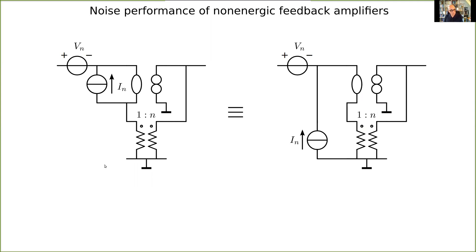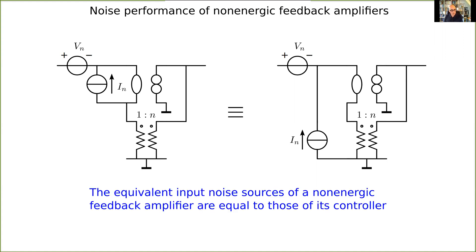Now we see that the equivalent input noise sources of the amplifier are equal to the equivalent input noise sources of the controller. The feedback network — in this case the transformer — does not affect the signal-to-noise ratio. Of course, this is an ideal transformer. This is a property of non-energic feedback amplifiers: the equivalent input noise sources of non-energic feedback amplifiers equal those of their controller. So negative feedback is not improving the signal-to-noise ratio — but it is also not deteriorating it in this case.